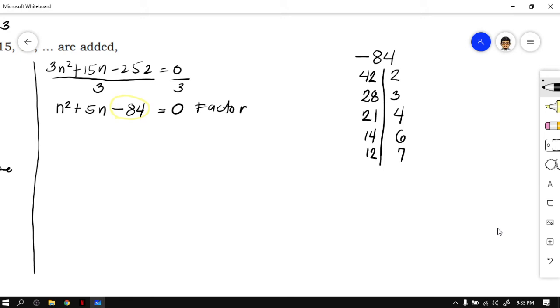Now next, observe that the number you are factoring is negative. Therefore, you have to subtract these 2 factors since 84 is negative. So 42 minus 2 is 40, 28 minus 3 is 25, 21 minus 4 is 17, 14 minus 6 is 8, 12 minus 7 is 5. Now let's go back to the equation. Your goal is to get a positive 5. Which among the factors of 84 gives you 5? That is 12 and 7.